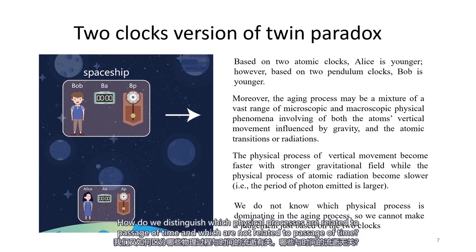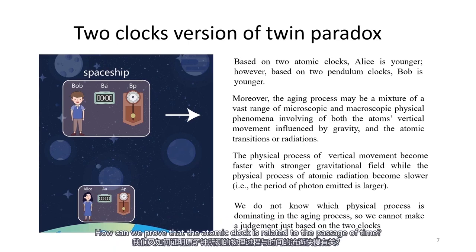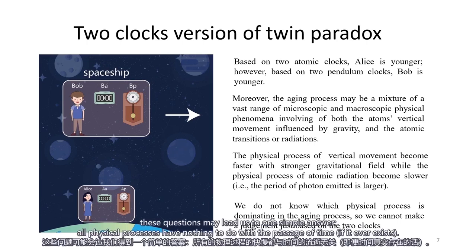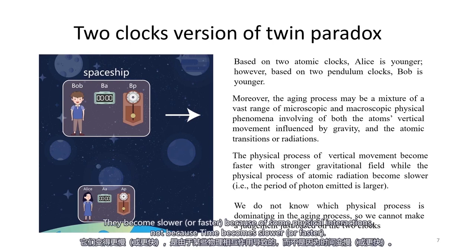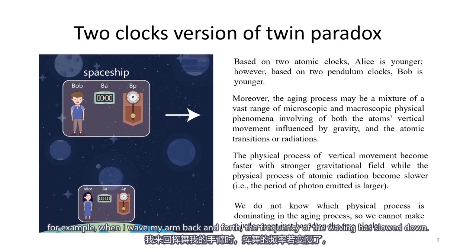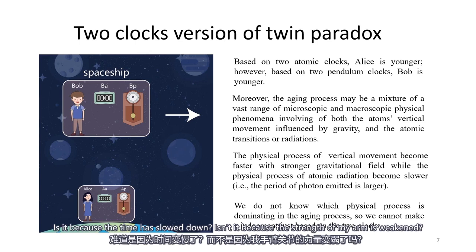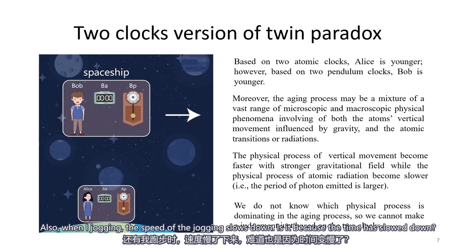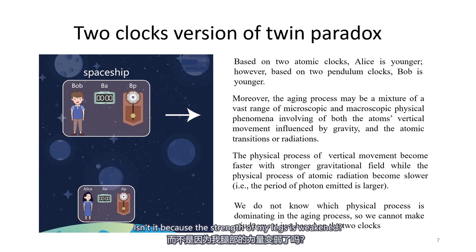How can we prove that strong gravity can make the aging process of our human body slower? Or what makes us believe that the aging process of an organism is related to the passage of time while the pendulum clock is not? How do we distinguish which physical processes are related to the passage of time and which are not? How can we prove that the atomic clock is related to the passage of time? These questions may lead to one simple answer: all physical processes have nothing to do with the passage of time. They become slower or faster because of physical interactions, not because time becomes slower or faster.